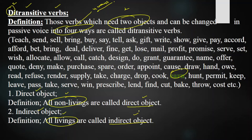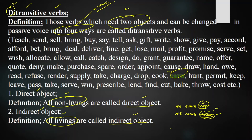For example, with the verb 'earn': if I say 'he earns you,' the meaning is wrong — you are not money that he will earn you. And if I say 'he earns money,' the question remains: for whom does he earn money? Neither object alone gives a complete meaning.